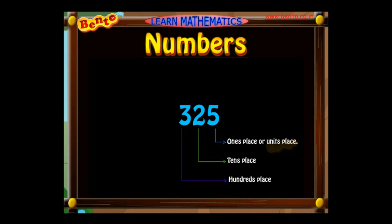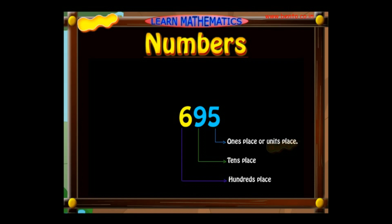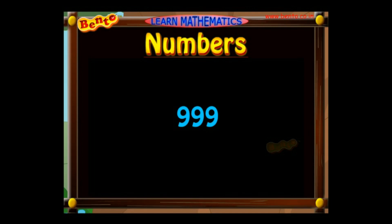The number 695 has the value 5 in its units place, 9 in its tens place, and 6 in its hundreds place. It has 6 hundreds, 9 tens, and 5 ones in it, so the number is read as 695.